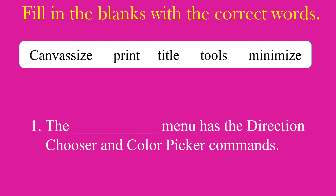Question number 1. The blank menu has the direction chooser and color picker commands. The answer is tools. The tools menu has the direction chooser and color picker commands.